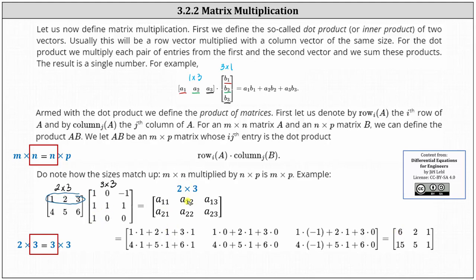Now let's find the entry in row one, column two, or a sub one two. We find the dot product of row one from the first matrix and column two from the second matrix. This gives us one times zero plus two times one plus three times zero, which is equal to two. Working our way across the first row, let's find the entry in row one, column three. We find the dot product of row one from the first matrix and column three from the second matrix. This gives us one times negative one plus two times one plus three times zero, which is equal to one.